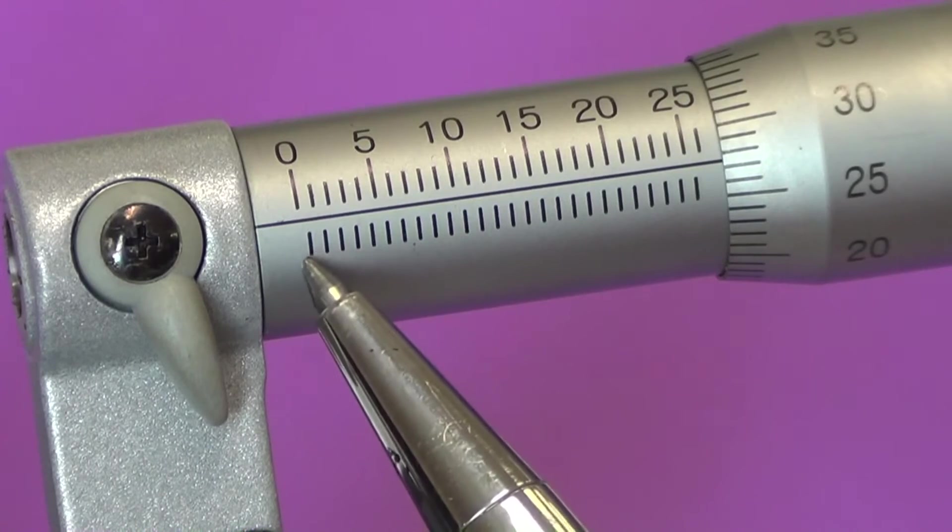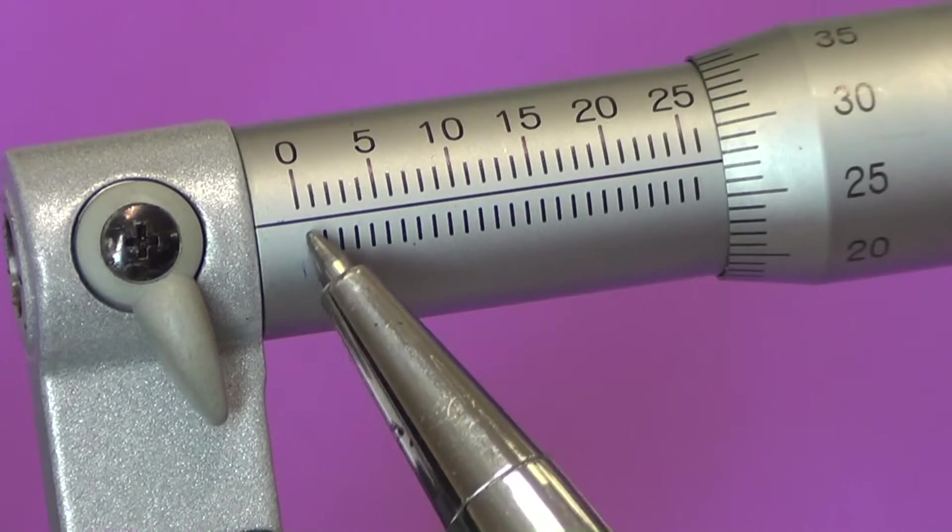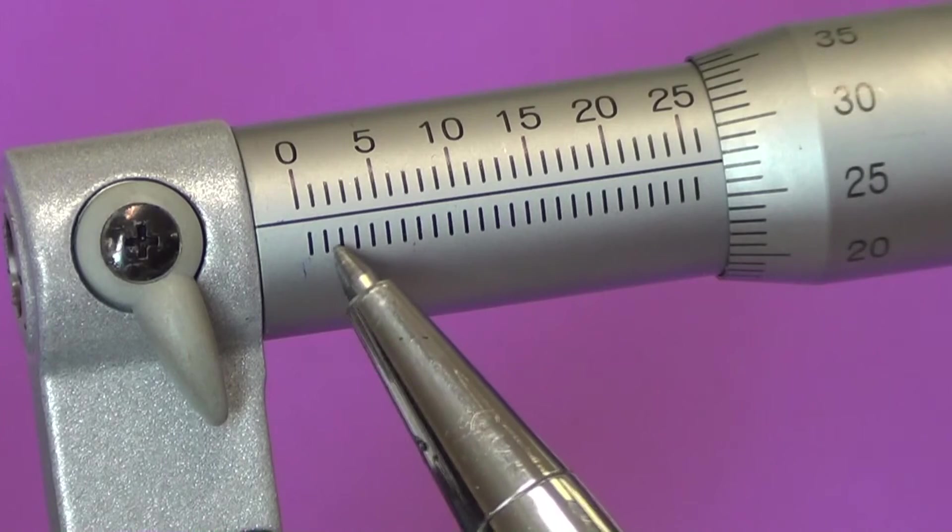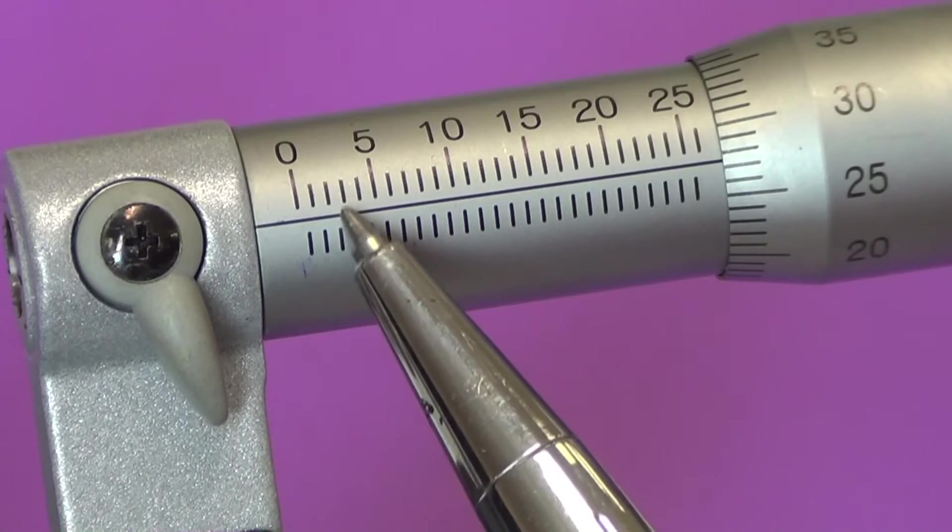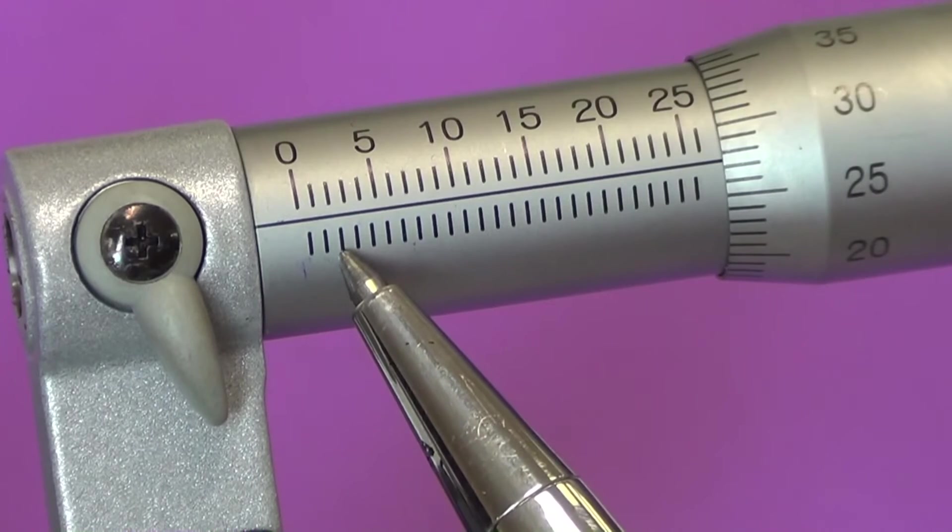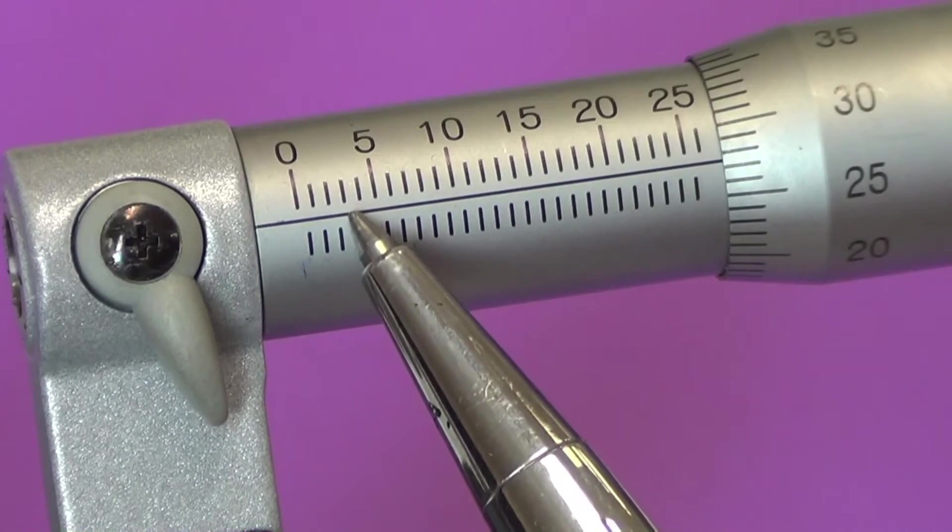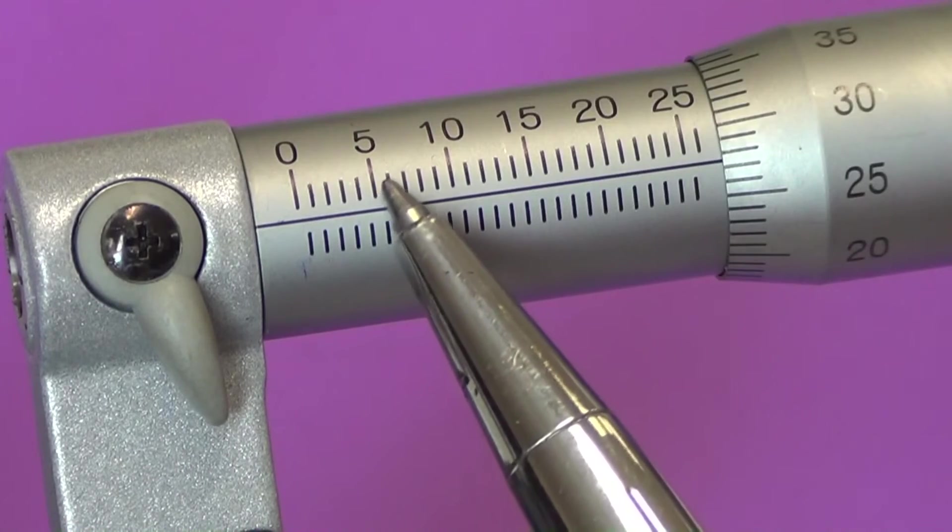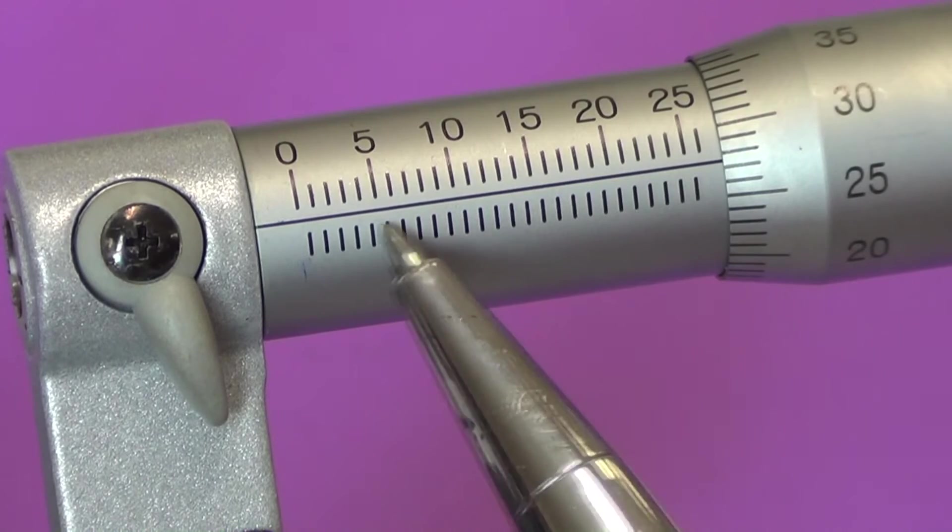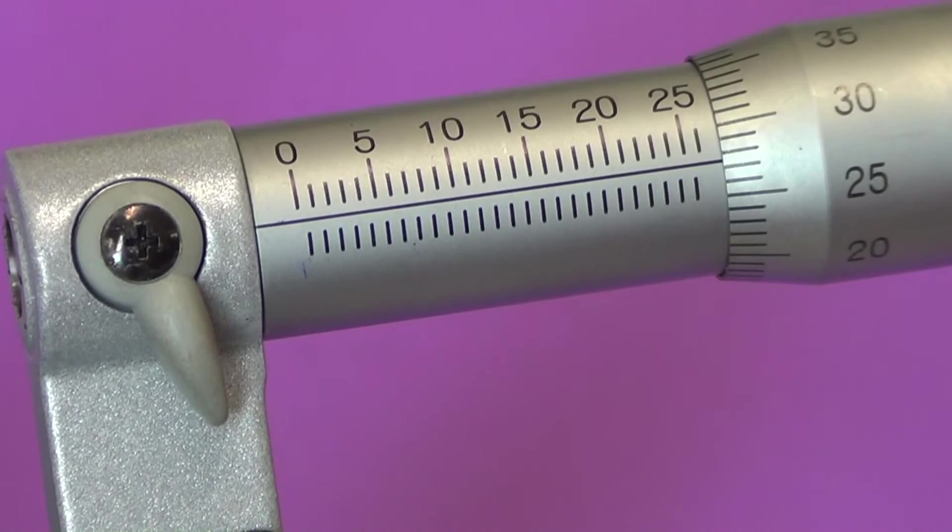So when we read the top, we have half a millimeter, then we have one millimeter, one point five millimeters, two millimeters, another half millimeter, two point five, three millimeters, three point five, four millimeters, four point five, five, and so on along the full length of the sleeve.